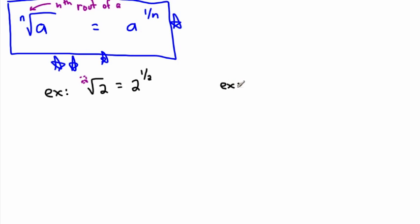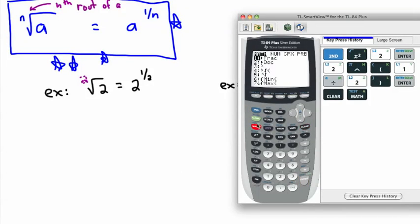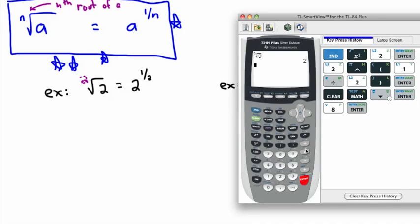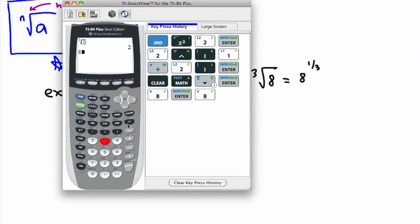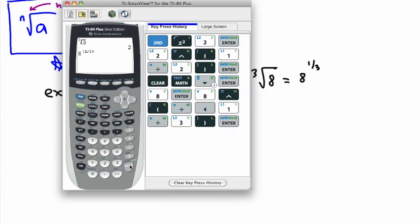For example, this is what we call the cube root of 8. That's the same thing as 8 to the power of 1 third. What this really asks is: is there a value that when you multiply it by itself three times, you get 8? It turns out the cube root of 8 is 2. On the calculator, cube root of 8 gives 2, and 8 to the power of 1 over 3 also gives 2.